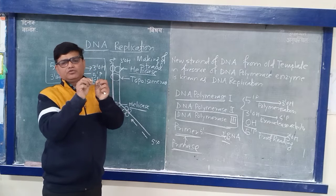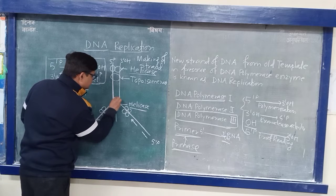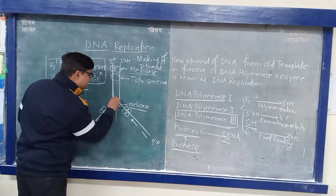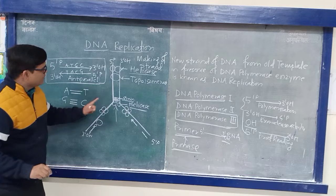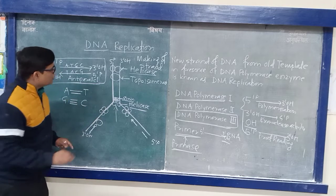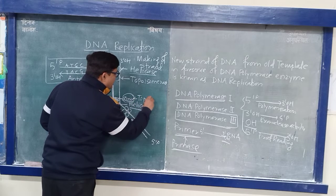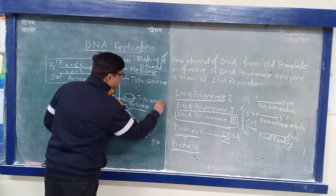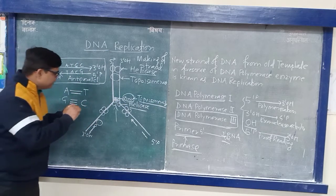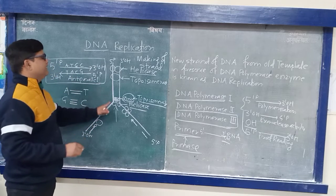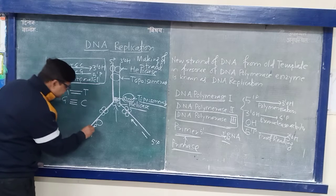During the removal and separation of the two strands, a torsional strain is created by Helicase. So that torsion is relaxed by Topoisomerase. The enzyme responsible for relaxing the strain created during opening of the helix is Topoisomerase.